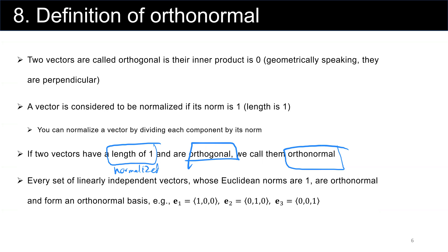This is the conclusion: Every set of linearly independent vectors whose Euclidean norms are 1 are orthonormal and form an orthonormal basis for that n-dimensional space.